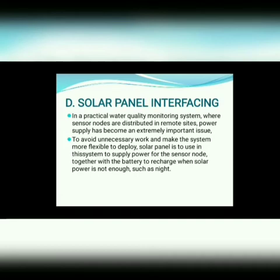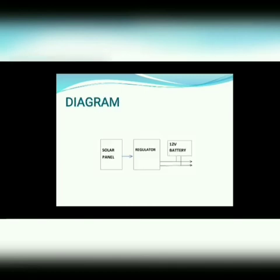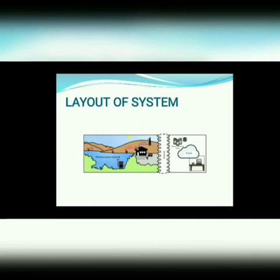Next is solar panel interfacing. In a practical water quality monitoring system where sensor nodes are distributed in remote sites, power supply has become an extremely important issue. To avoid unnecessary work and make the system more flexible to deploy, a solar panel is used in this system to supply power for the sensor node, together with a battery to recharge when solar power is not enough, such as at night. This is the circuit diagram for solar panel interfacing.